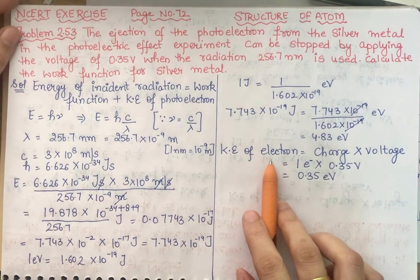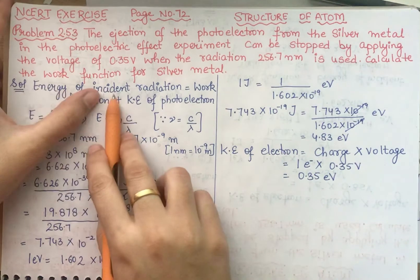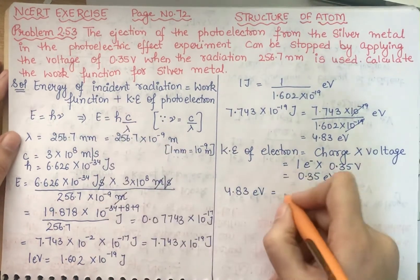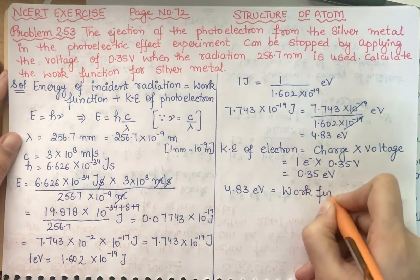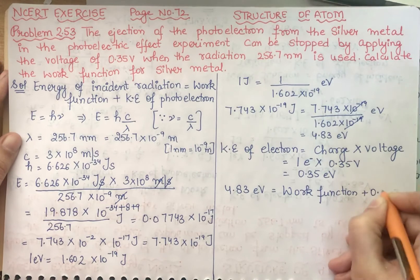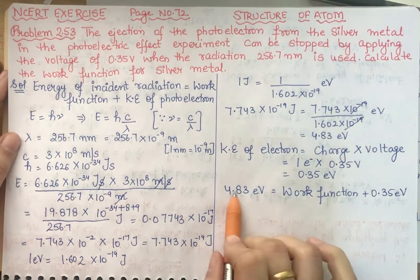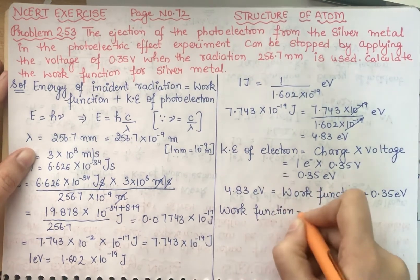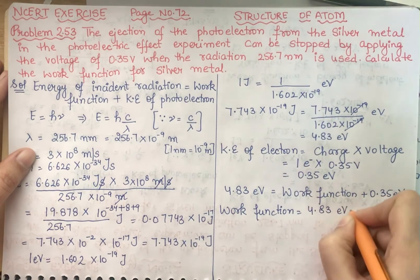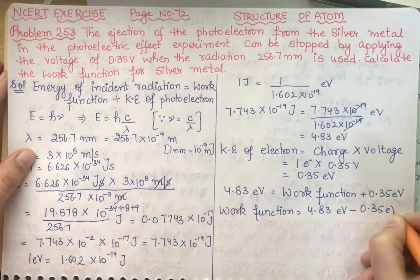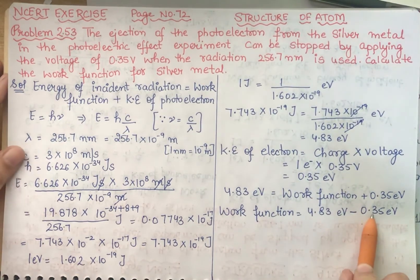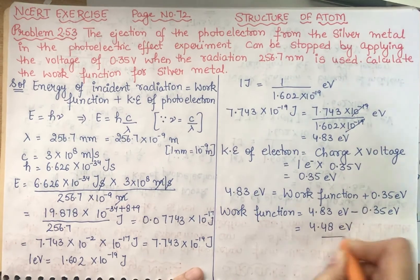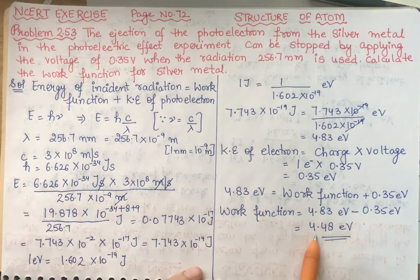Now we need to find the work function. Using the formula: energy of incident radiation = work function + kinetic energy of photoelectron. So, work function = 4.83 eV − 0.35 eV = 4.48 electron volt. This means the threshold energy (work function) for silver metal is 4.48 electron volt.